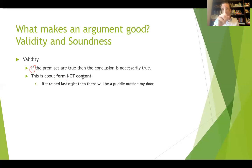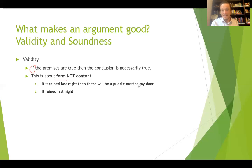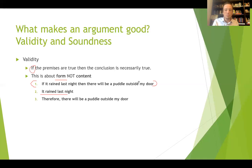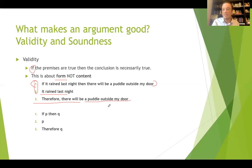Here's an example. Premise one: if it rained last night, then there will be a puddle outside my door. Premise two: it rained last night. Therefore, there will be a puddle outside my door. It doesn't actually matter if it rained last night or not. Let's assume those two premises are true — then the conclusion has to be true. There's no world where it could be false. And that, my friends, is a valid argument.